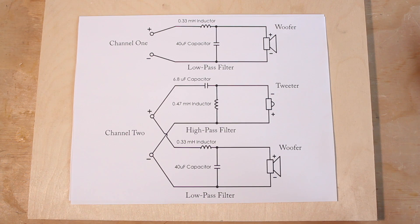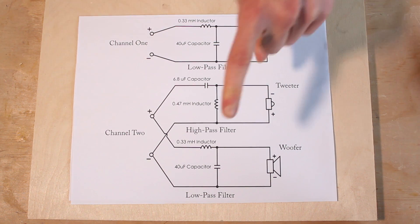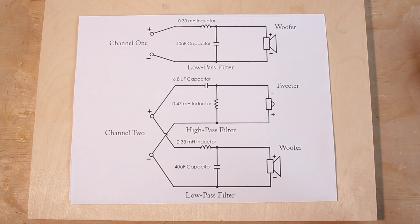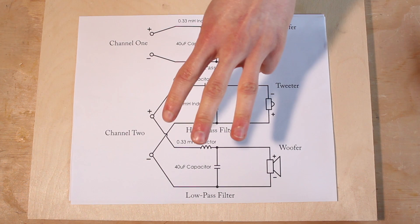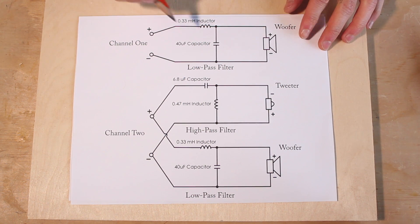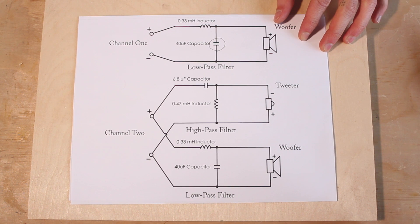So let's walk through a few different parts of a crossover diagram. There are really three main parts to crossover diagrams, or crossovers in general: there's capacitors, there's inductors, and there's resistors. The symbol for a capacitor is these two lines right here.